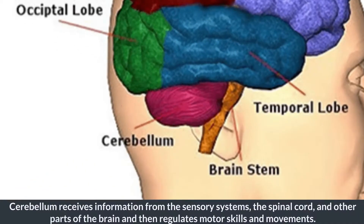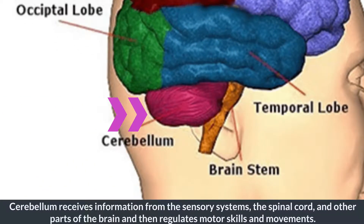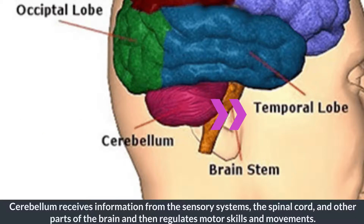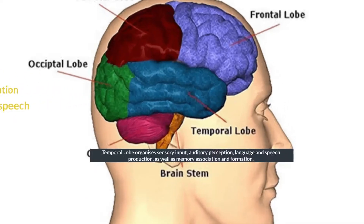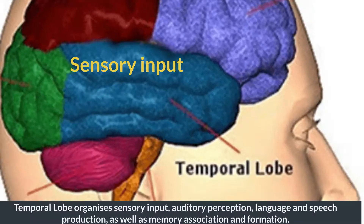The cerebellum receives information from the sensory systems, the spinal cord, and other parts of the brain, and then regulates motor skills and movements.